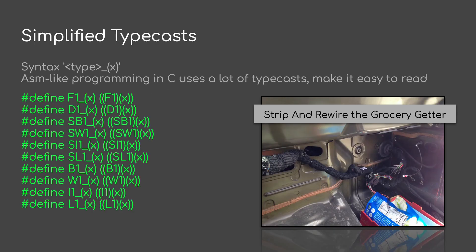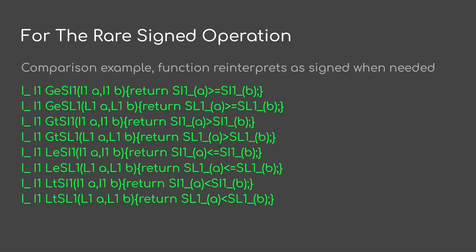Let's continue with some simplified typecasts. I can typecast anything via type underscore. These defines are set up for every single type. Note, with ASM-like programming in C, there's going to be a lot of typecasts, so I like to make it easy to read. For the rare case I need a signed operation, like comparisons for instance, I have a bunch of inline functions that will do reinterpretation — they take unsigned arguments, interpret them as signed, do the operation, and then return an unsigned result.